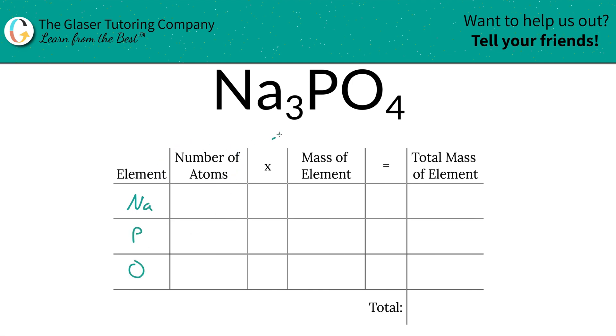Then we're going to identify the number of atoms of each, and that's where the subscripts come into play. Now if there's no subscript at the bottom of a particular element, just put in a one. So we've got three sodiums, one phosphorus,